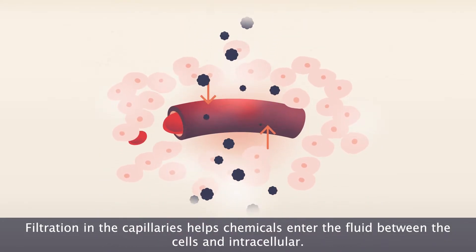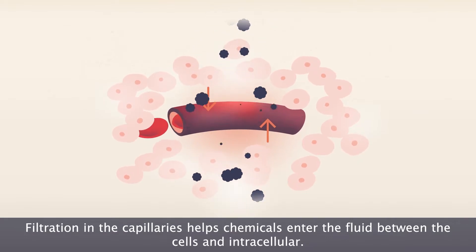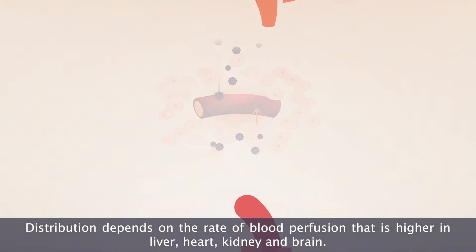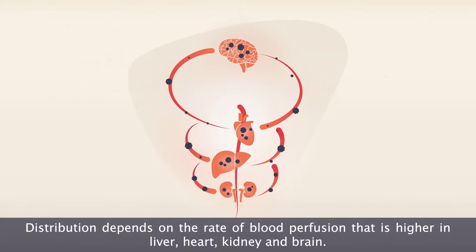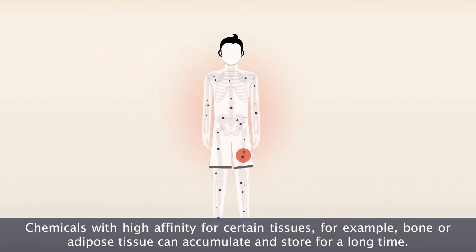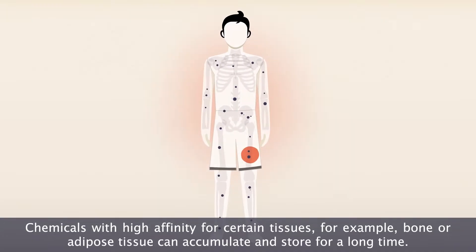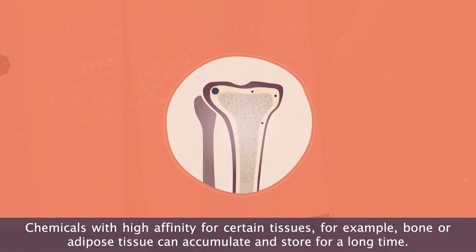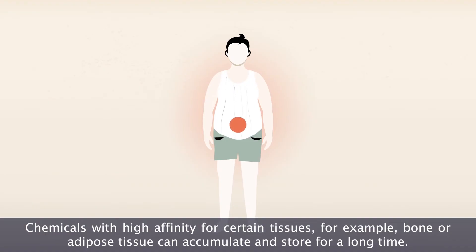Filtration in the capillaries helps chemicals enter the fluid between the cells and intracellular tissues. Their distribution depends on the rate of blood perfusion, which is higher in the liver, heart, kidney, and brain. Chemicals with high affinity for certain tissues, for example bone or adipose tissue, can accumulate and store for a long time.